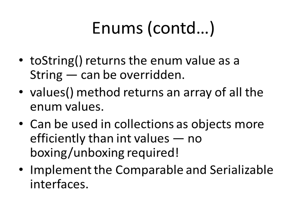An enum has a default toString method which returns the enum value as a string, but this toString can be overridden even for the enum, just like you can override the toString method for a class. An enum also has a values method which returns an array of all the enum values, so you can use the values method to iterate over all the values of an enum. And they can be used in collections as objects instead of using integer values. If you do that, then there is no boxing or unboxing required. Whereas if you use primitive ints, since collections can only contain objects, the primitive ints are converted to the Integer wrapper type.